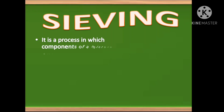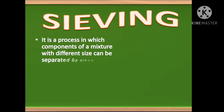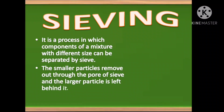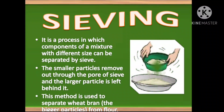Sieving is a process in which components of a mixture with different sizes can be separated by a sieve. The smaller particles pass out through the pores of the sieve, and the larger particles are left behind. This method is used to separate wheat bran, which is the bigger particle, from flour.